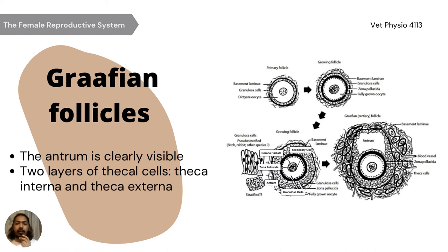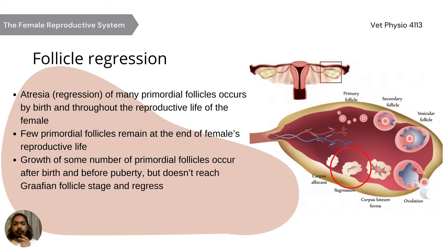The Graafian follicle is the follicular stage before ovulation. The antrum is clearly visible and there are two layers of thecal cells — the theca interna and theca externa. It is surrounded by the zona pellucida and the layer of several cells known as the corona radiata. Follicle regression — the atresia or regression of many primordial follicles — occurs by birth and throughout the reproductive life of the female. Few of the primordial follicles remain at the end of the female's reproductive life. The growth of some primordial follicles occurs after birth and before puberty but does not reach the Graafian follicle stage and regresses.